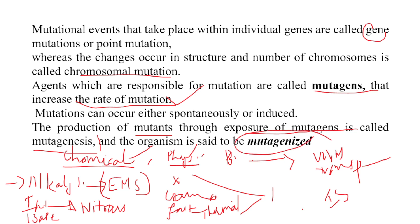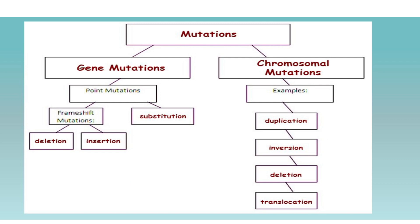Mutations are mainly classified into gene mutations and chromosomal mutations. Chromosomal mutations include examples such as duplication, inversion, deletion, and translocation.